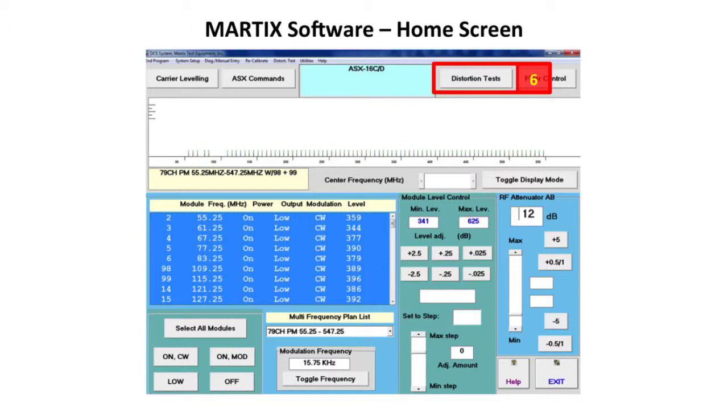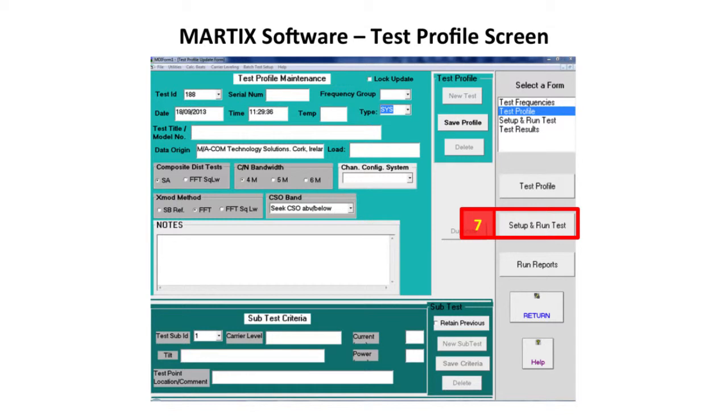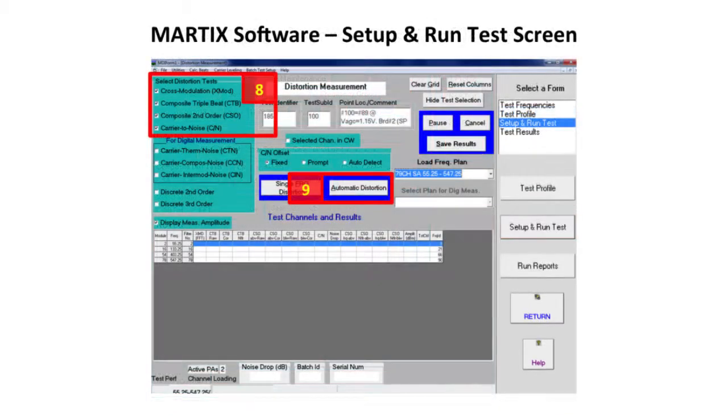Information about the test conditions and the DUT can be entered on this screen. The parameters to be measured such as CSO CTB can be selected on this screen and the measurement started.